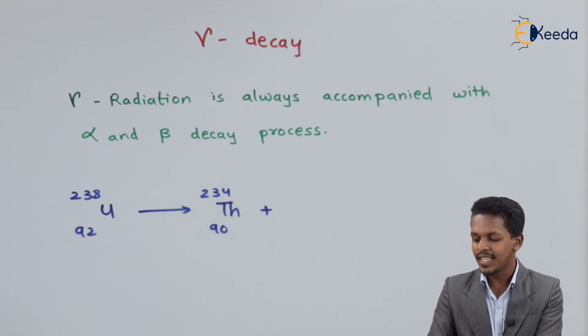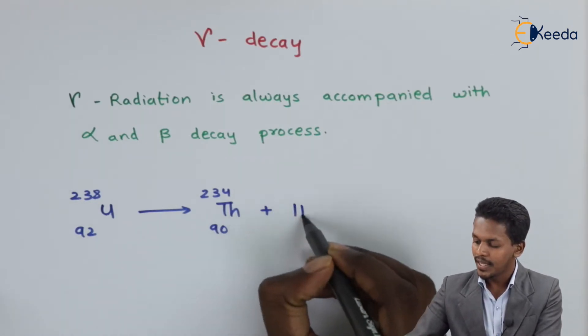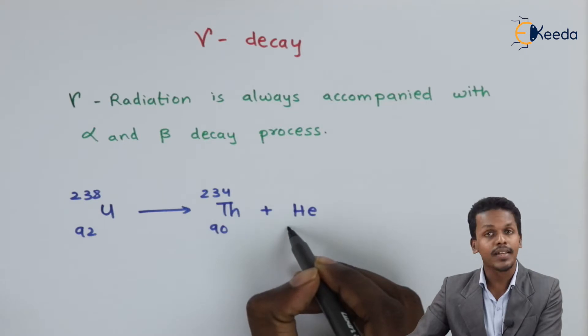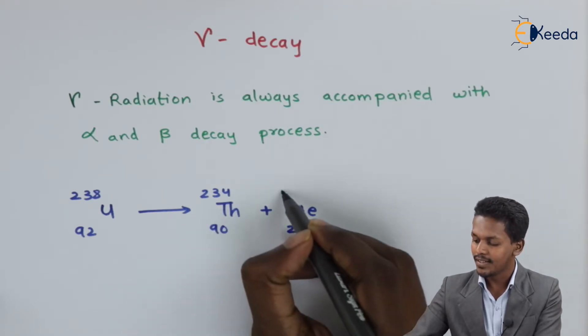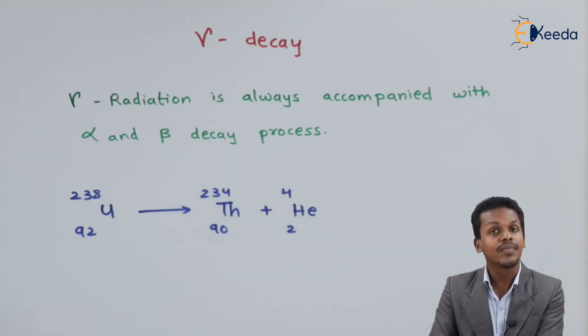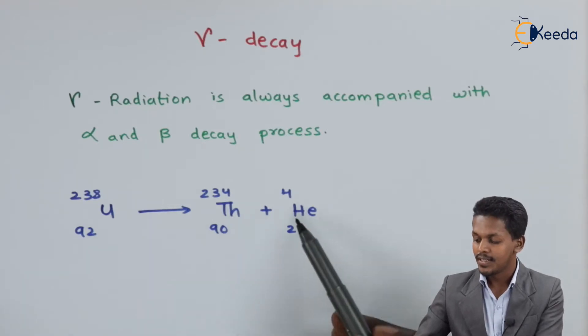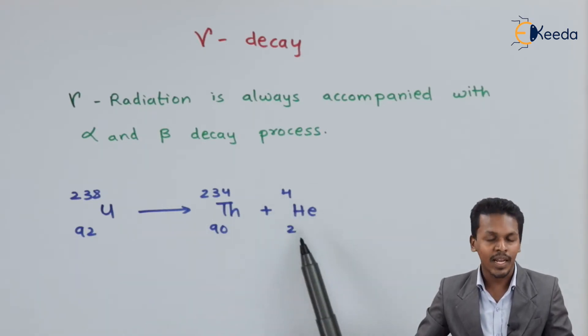The particle that has been produced is helium having atomic number 2 and atomic mass number 4. This is the alpha particle.